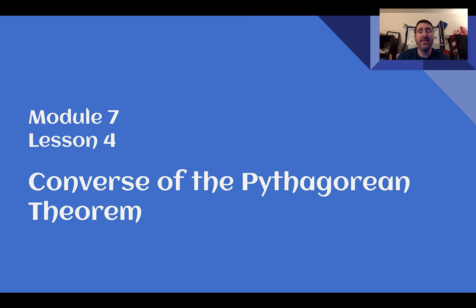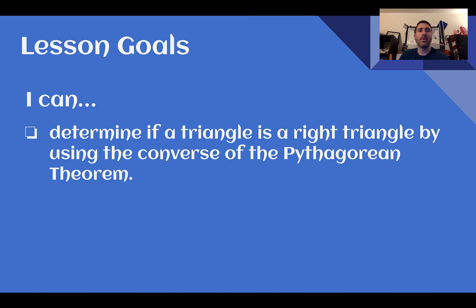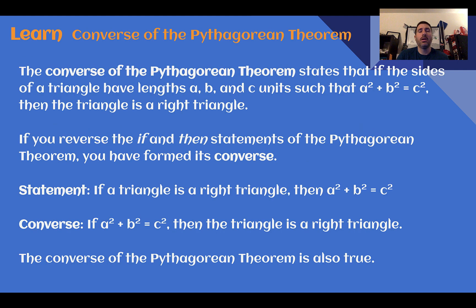Hey there, Mr. Weaver here, and this is 8th grade, Module 7, Lesson 4: Converse of the Pythagorean Theorem. After this lesson, you need to be able to determine if a triangle is a right triangle by using the Converse of the Pythagorean Theorem. Let's learn.